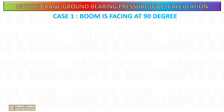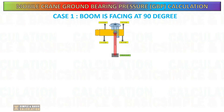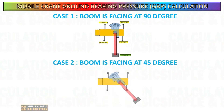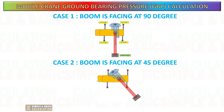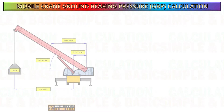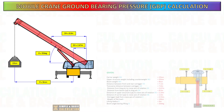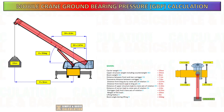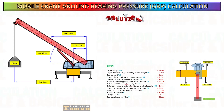In this example, we will perform two calculations. In case number one, the boom is positioned at a 90-degree angle, whereas in case number two, the boom is positioned at a 45-degree angle. Case number one calculation: boom is facing at 90 degrees, lifting over the side. Please take note of all the formulas and have your calculator ready so that you can follow along with my computation.